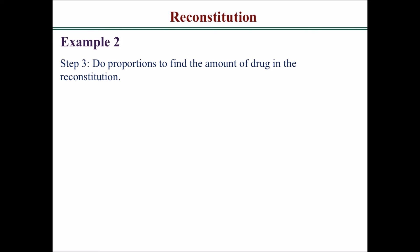Next, use proportions to find the total amount of drug in the reconstitution. The original concentration given is 468.75 milligrams per 5 ml. Find the total amount of drug in 80 ml: cross-multiplying gives you 7,500 milligrams of total drug.